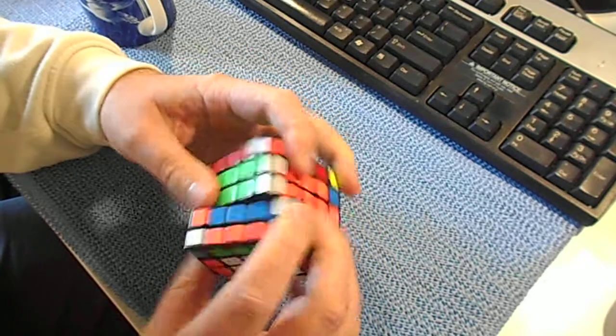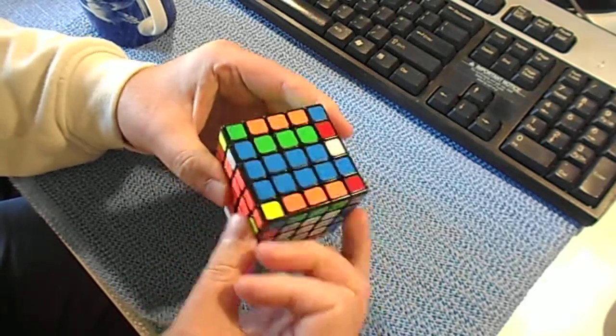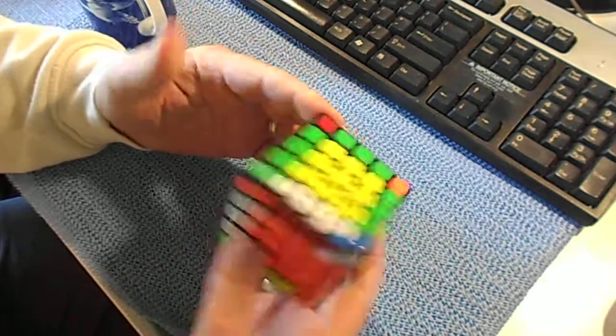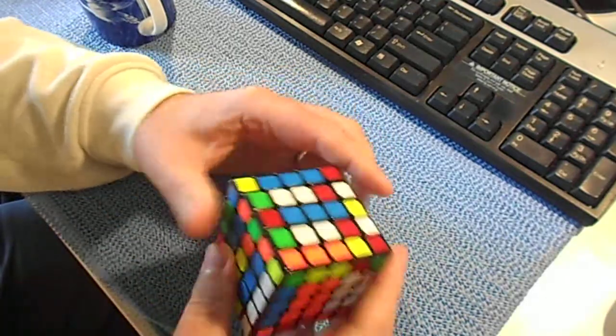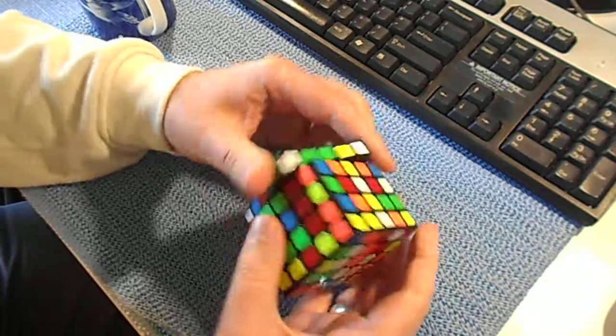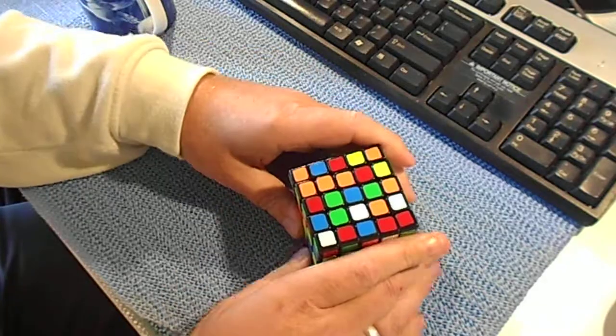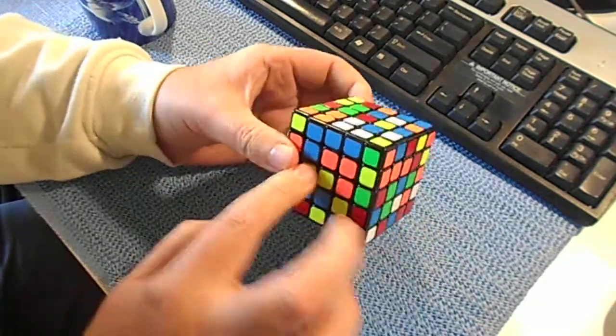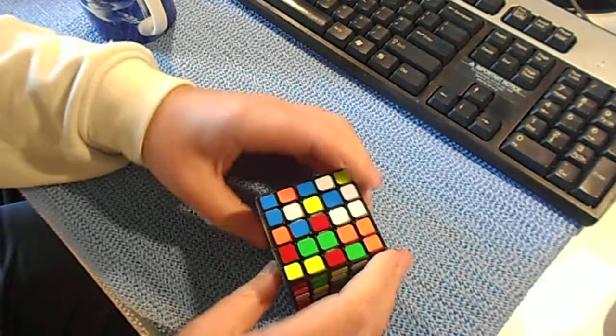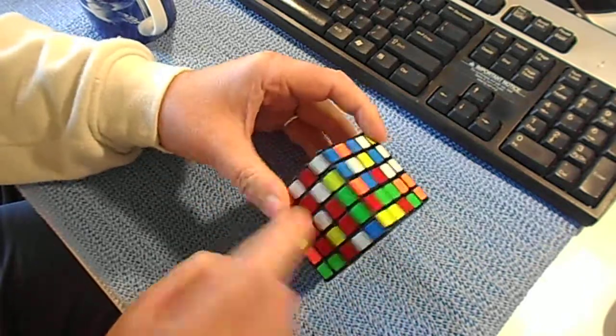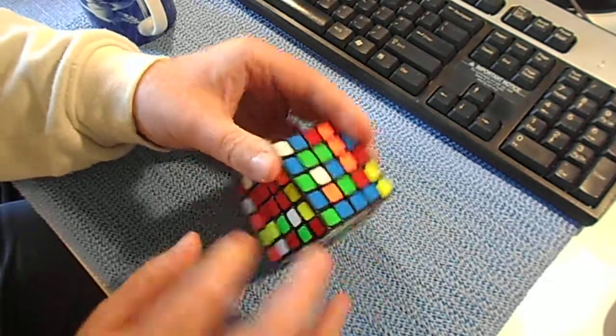So this is how I do the last four edges. Now I'll hand scramble and show you how I do center building. First thing I look for is build blocks. Like this one is ideal, but unfortunately the center isn't solved. But it's one move, so I do it like this. Now I have two lines.